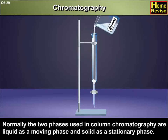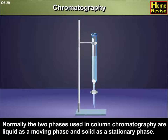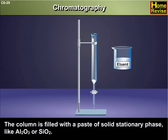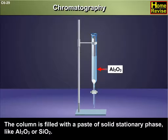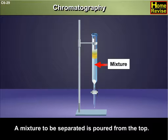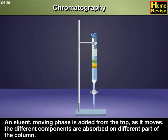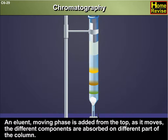Normally, the two phases used in column chromatography are liquid as the moving phase and solid as the stationary phase. The column is filled with a paste of solid stationary phase like aluminum oxide or silica. A mixture to be separated is poured from the top. An eluent moving phase is added from the top as it moves, and the different components are adsorbed on different parts of the column.